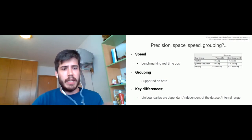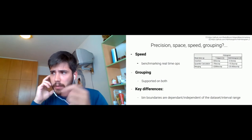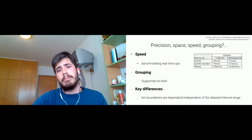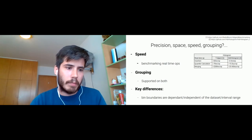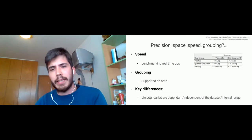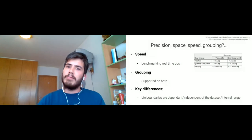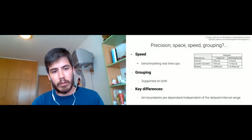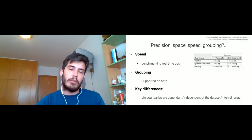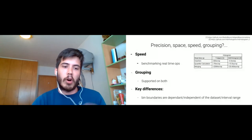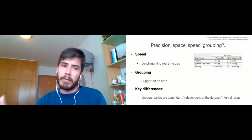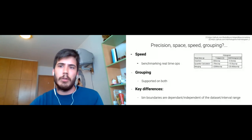Regarding grouping or merging: both support it, and this is very important because you can basically have several sketches with different varieties and merge them to have a full latency distribution of your system. So you can have, for example, several sketches — one per machine or one per time range — and then merge them. There are several sketch implementations that don't support this, so you should take this into account. Regarding the key differences between these two sketches: the bin boundaries and precision of the HDR histogram are dependent on the interval range, so depending on the data set, you will have more or less bins.